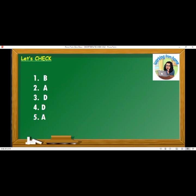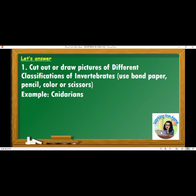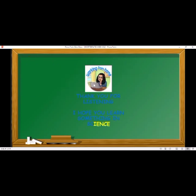I hope you got 5 over 5. Assignment: Cut out or draw pictures of different classifications of invertebrates. Use bond paper, pencil, coloring materials, or scissors. An example is cnidarians. Good luck! Thank you for listening. I hope you learned something in science. Goodbye!